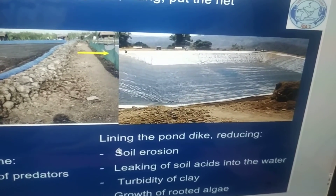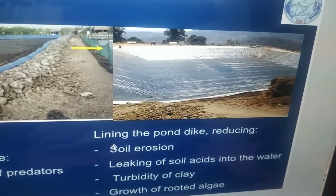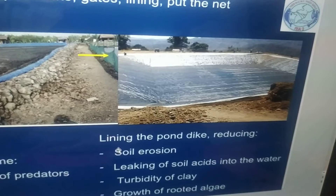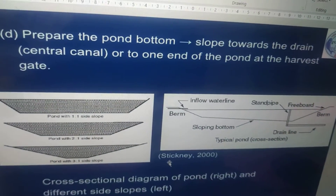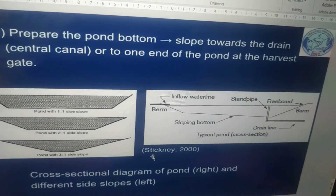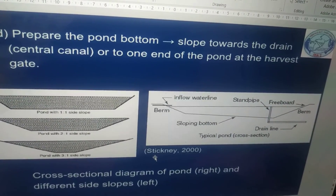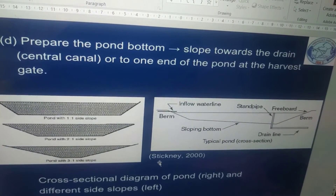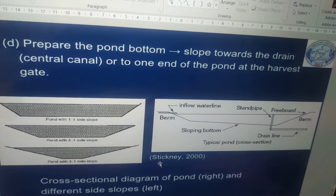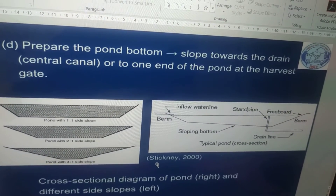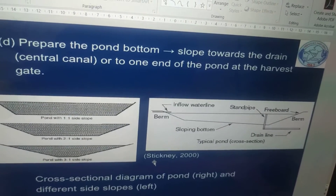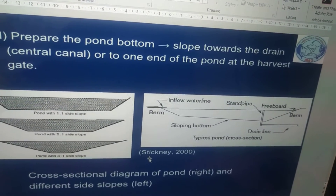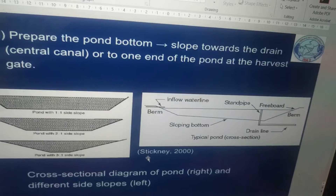Lining the pond deck reduces soil erosion, leaking of soil acids into the water, turbid clay, and growth of rooted algae. Prepare the pond bottom with a slope towards the draining end or to one end of the pond at the harvest gate. You have to provide a slope, which is very useful at the time of draining the pond, especially during harvest.